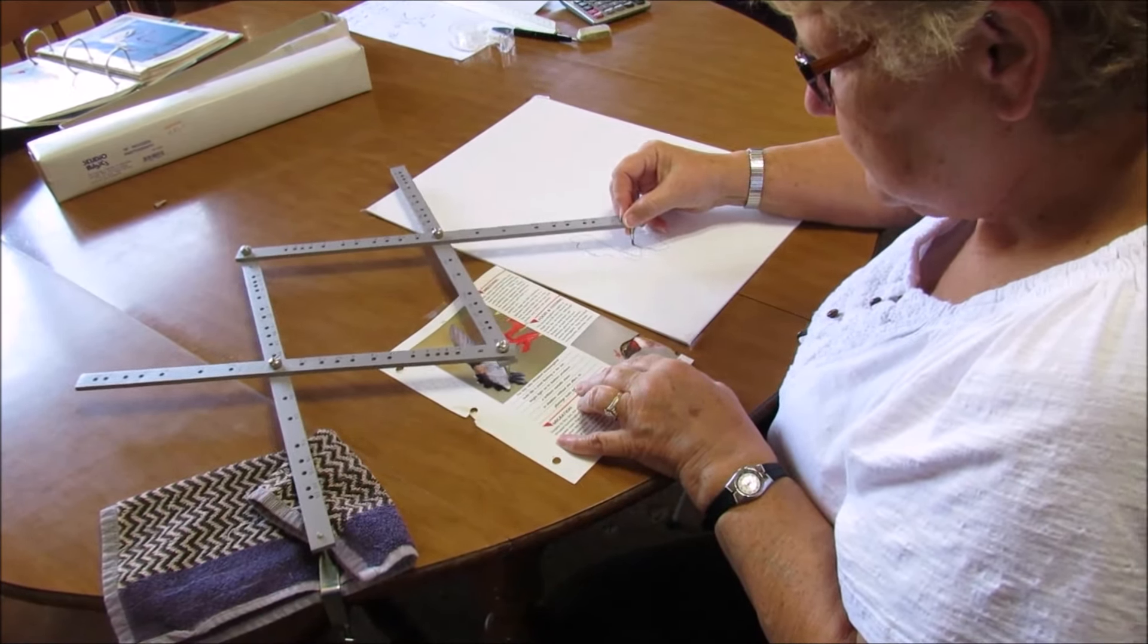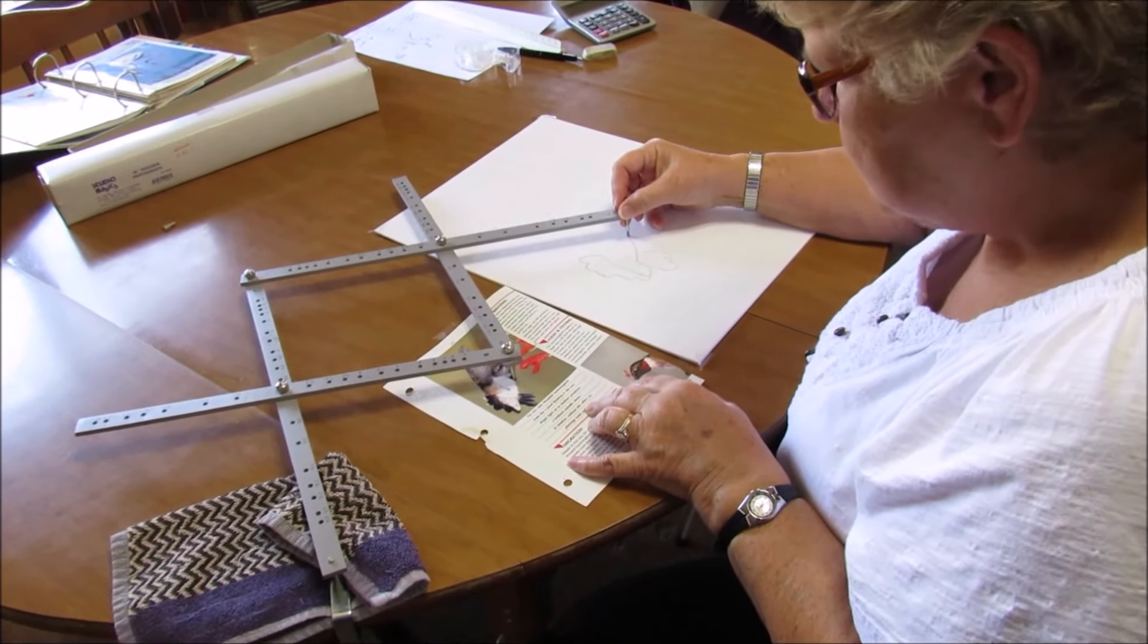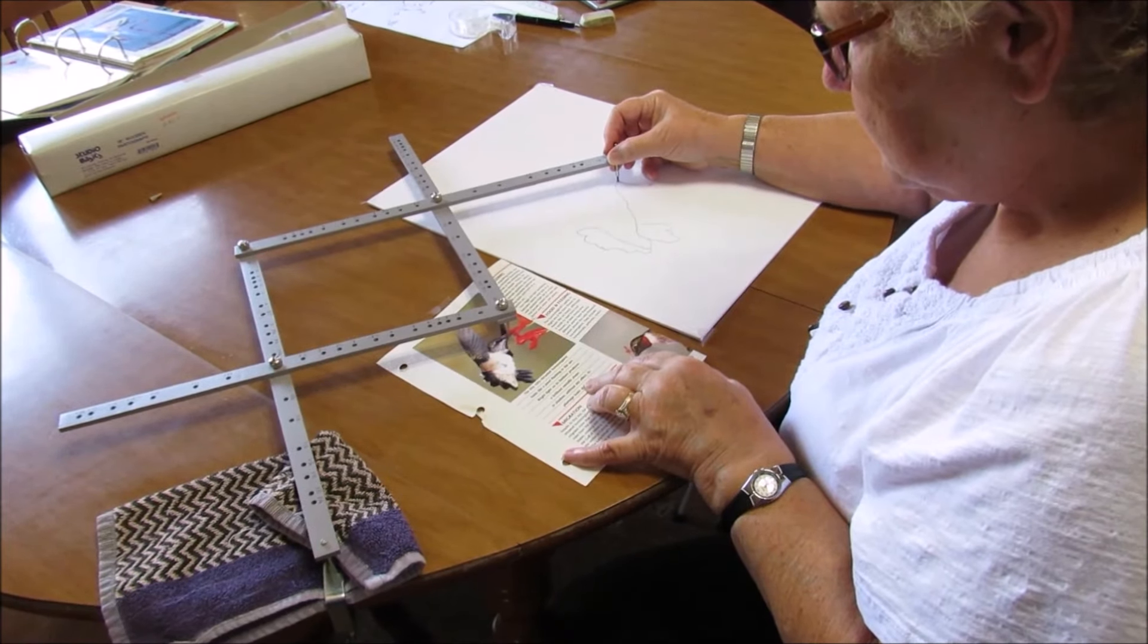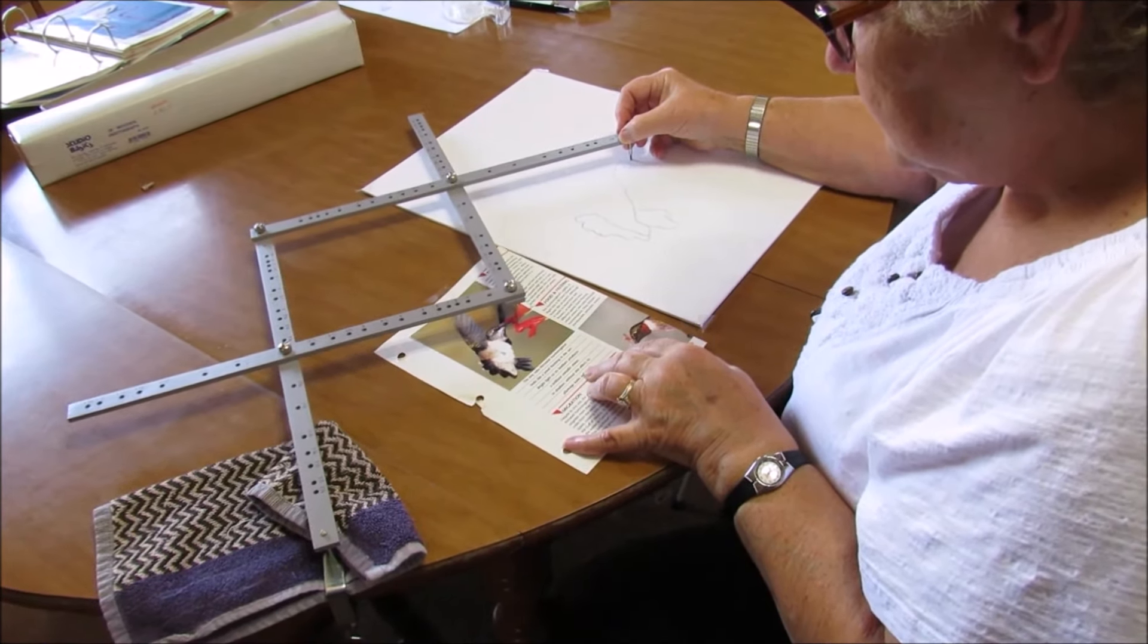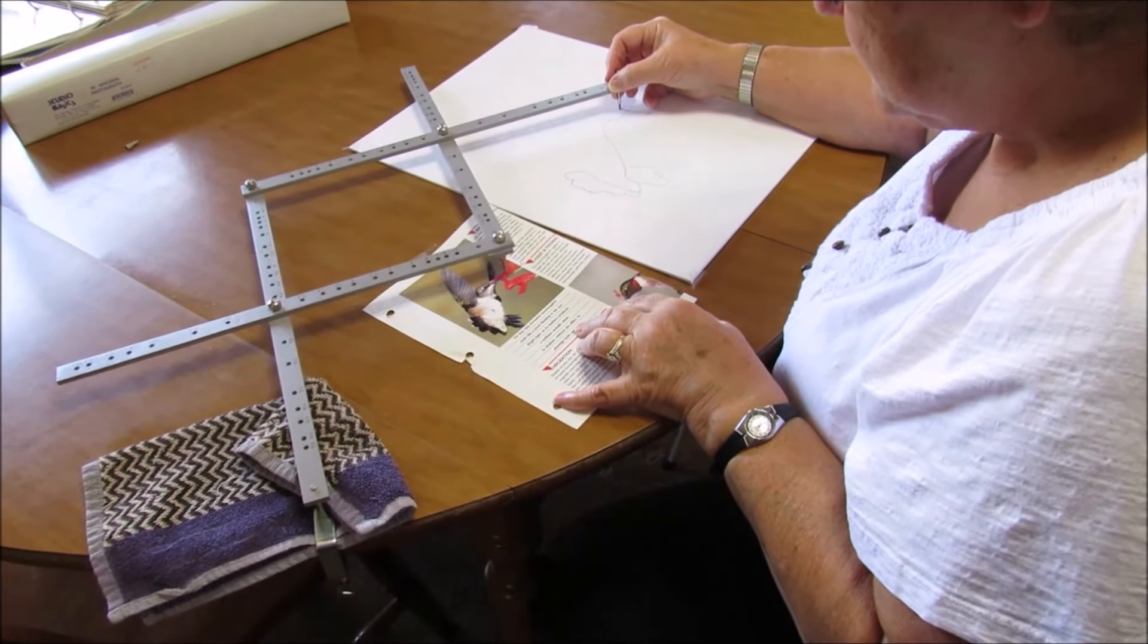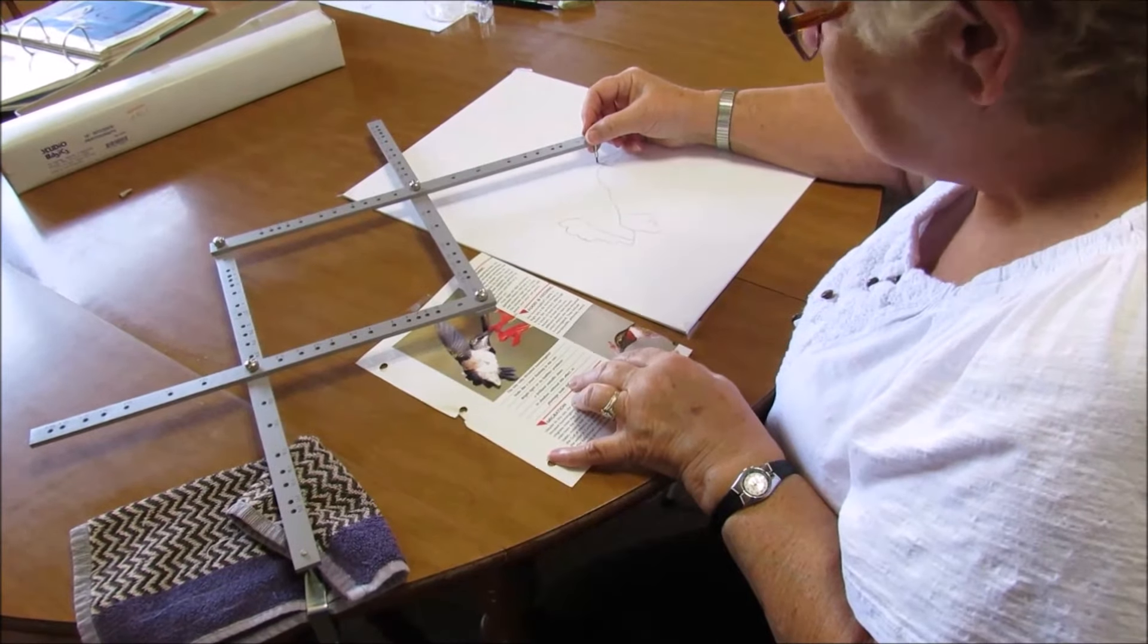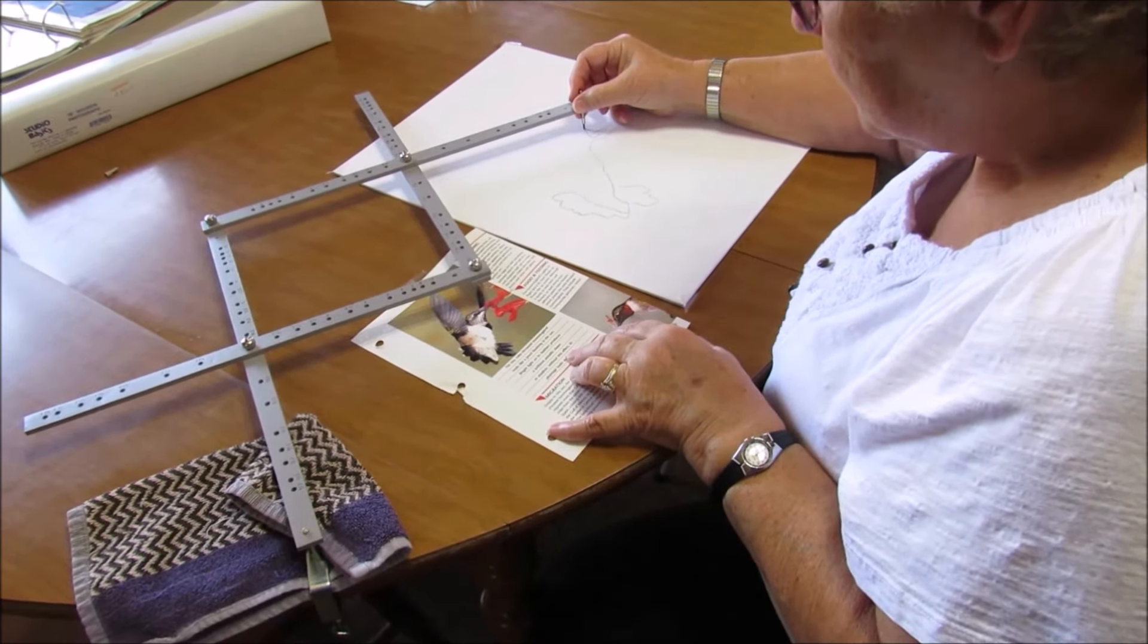And so you can start filling in the details of your photograph and it magnifies it two times because we have the pantograph set at two, which precisely doubles the original image. The original image was four and a half inches, so it'll end up being about nine inches tall when we get done.